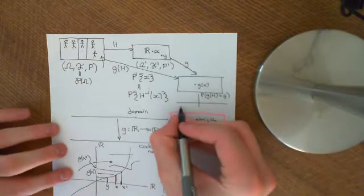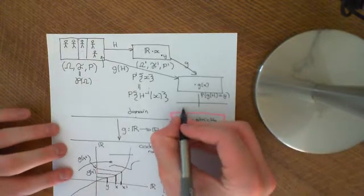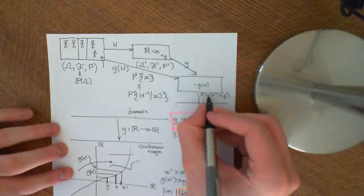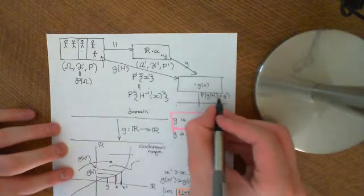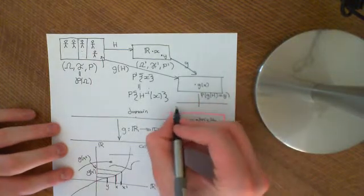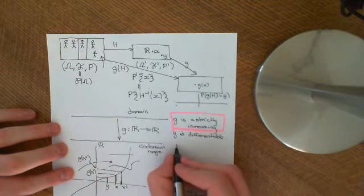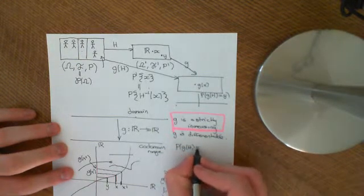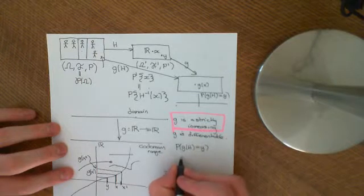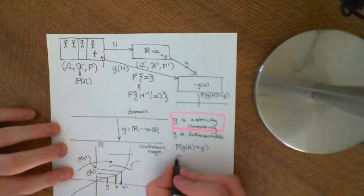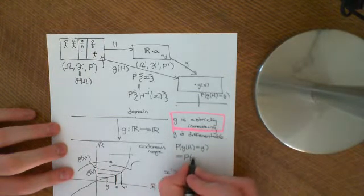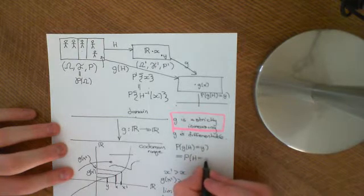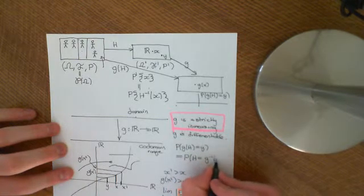So the way we'll do this is: this probability mass function is going to be equal to — the probability that g of H equals some little y — we want that to equal the probability that the random variable big H was equal to g inverse of y.